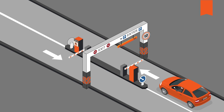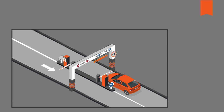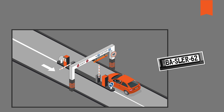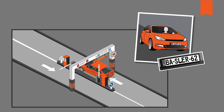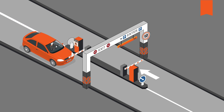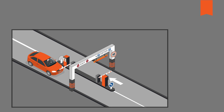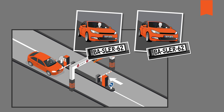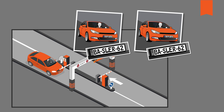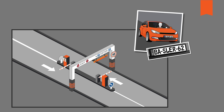Imagine a car is entering a parking garage. A camera takes an image of the license plate and the car. When the car is exiting the garage, the camera takes another image. Then the software compares those two images. The gate only opens when the license plate and the car model are the same as in the first image.